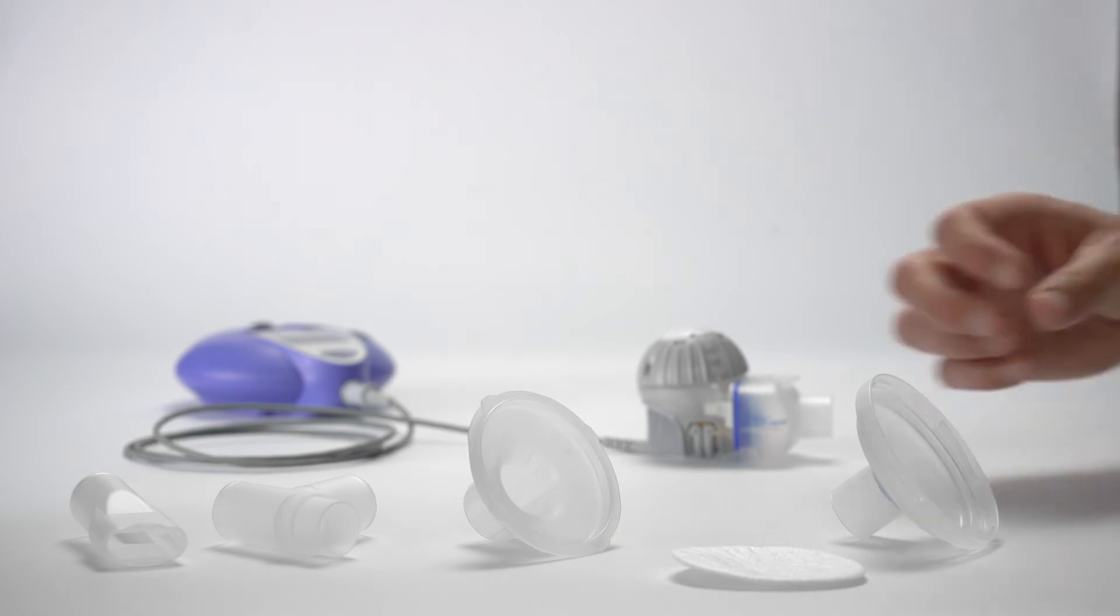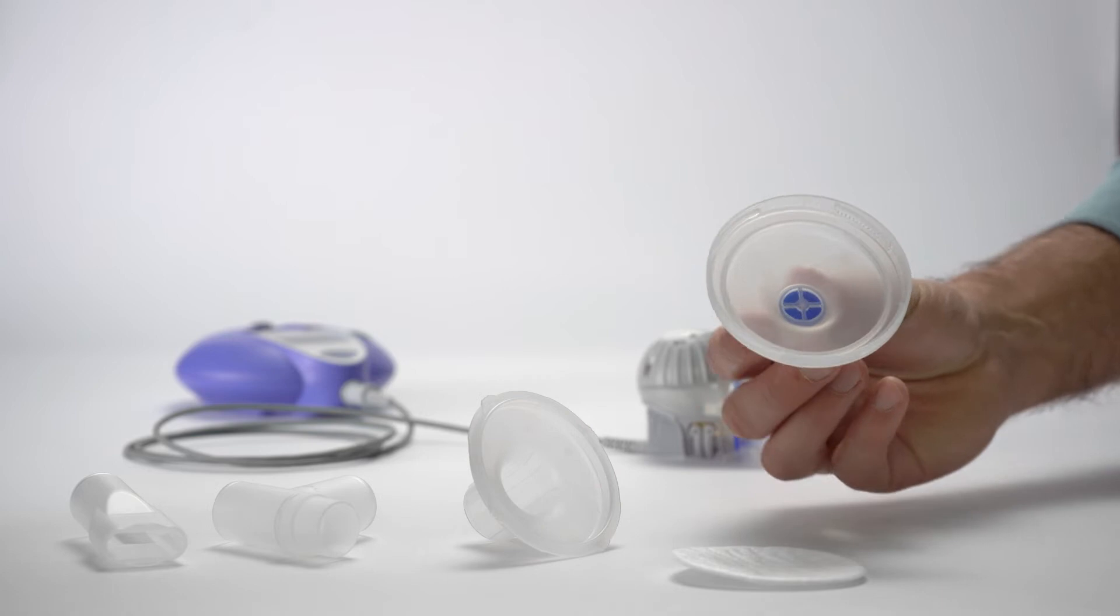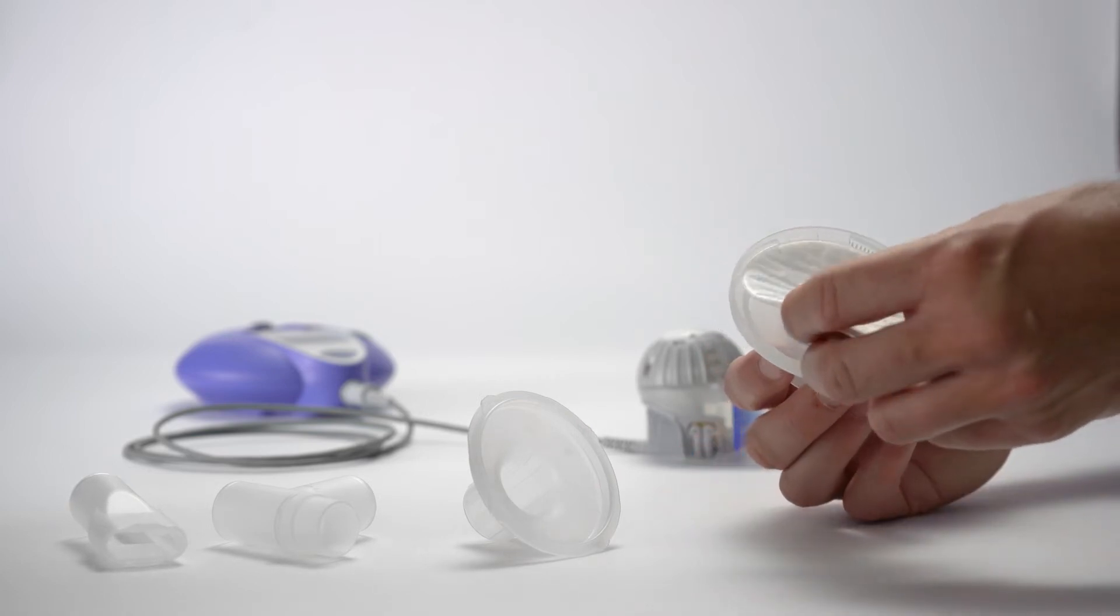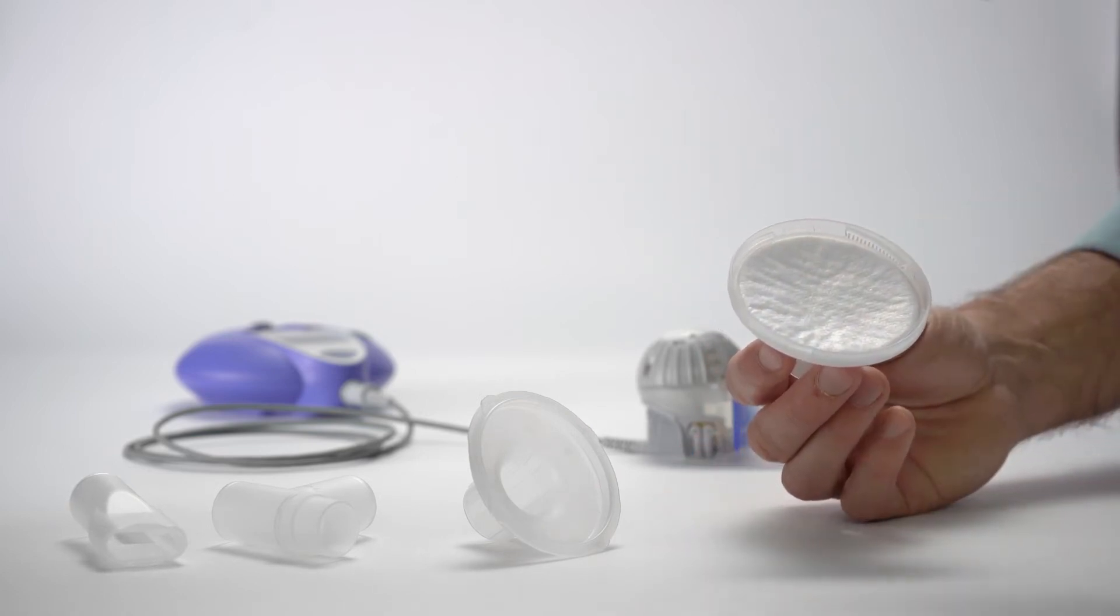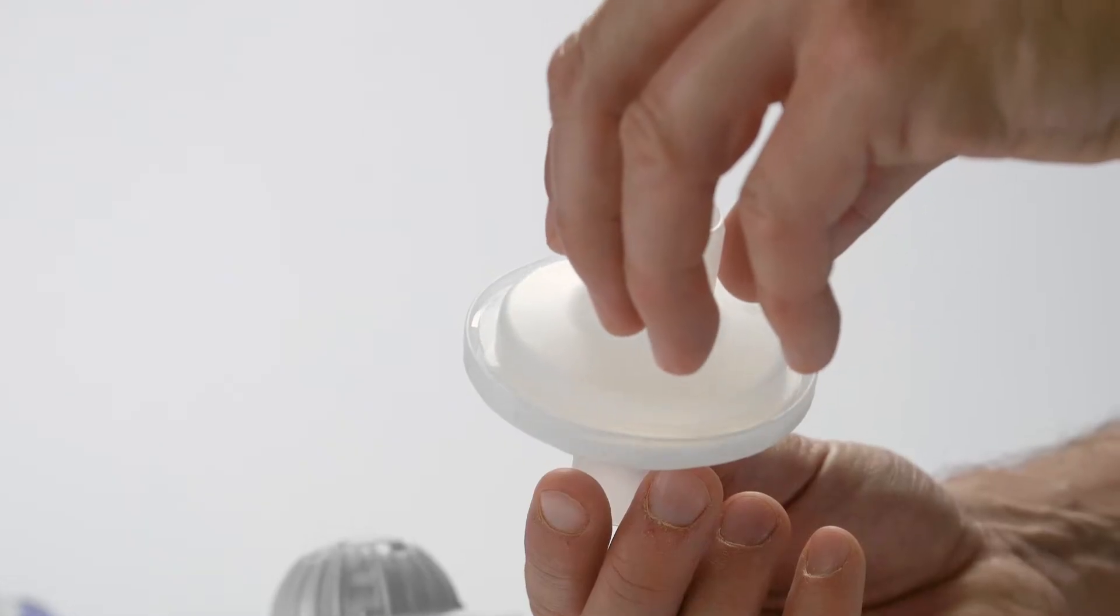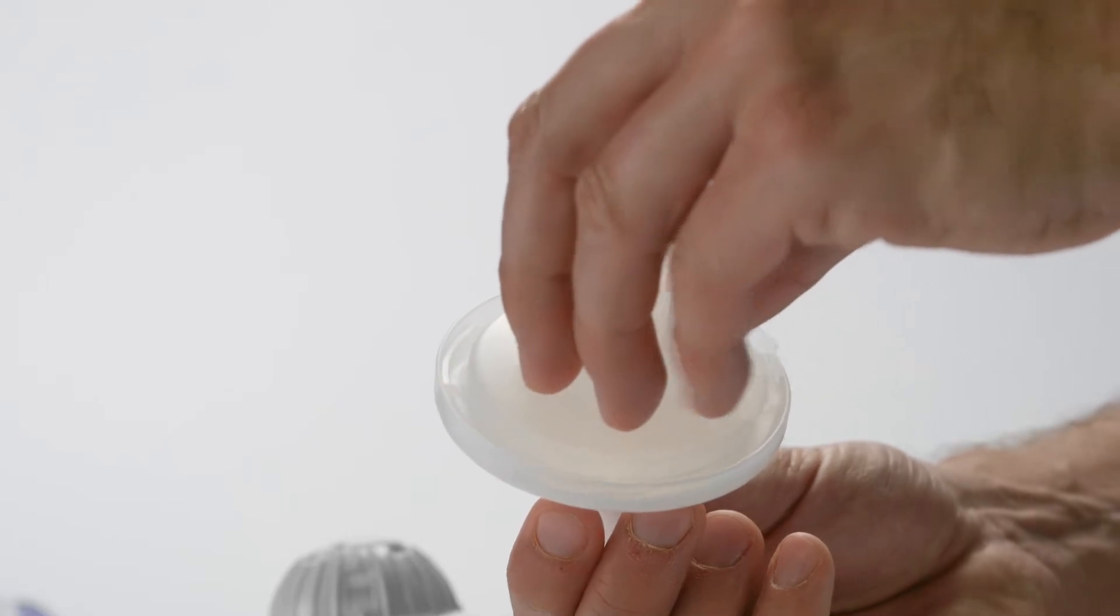Place the PARI filter pad into the upper part of the exhalation filter. Then insert the lower part of the exhalation filter and close the exhalation filter by turning the lower section clockwise until it stops.